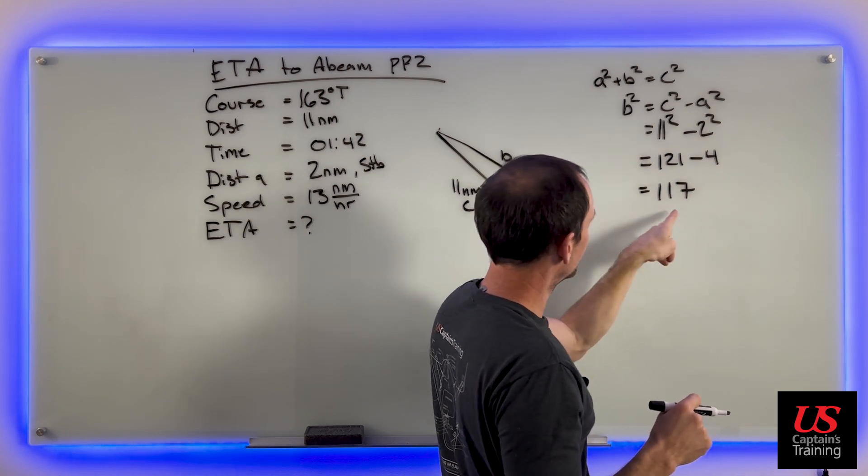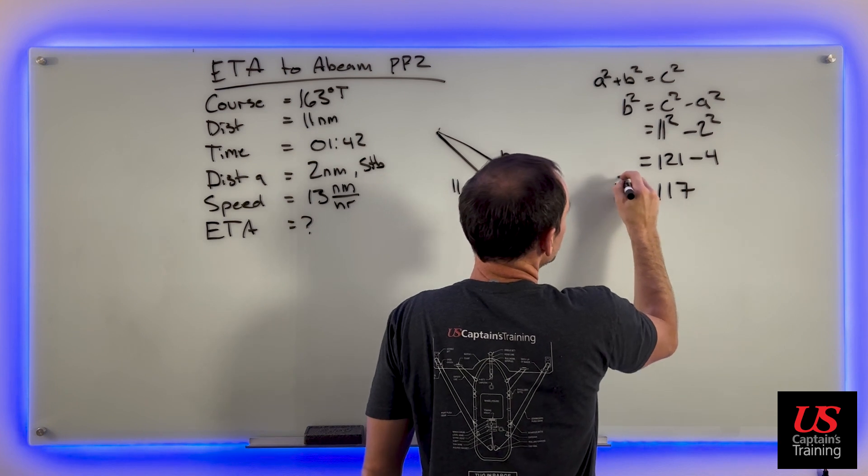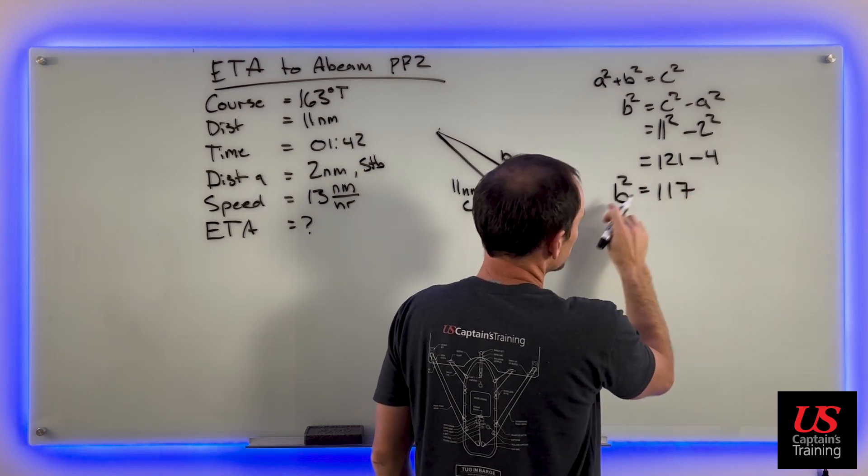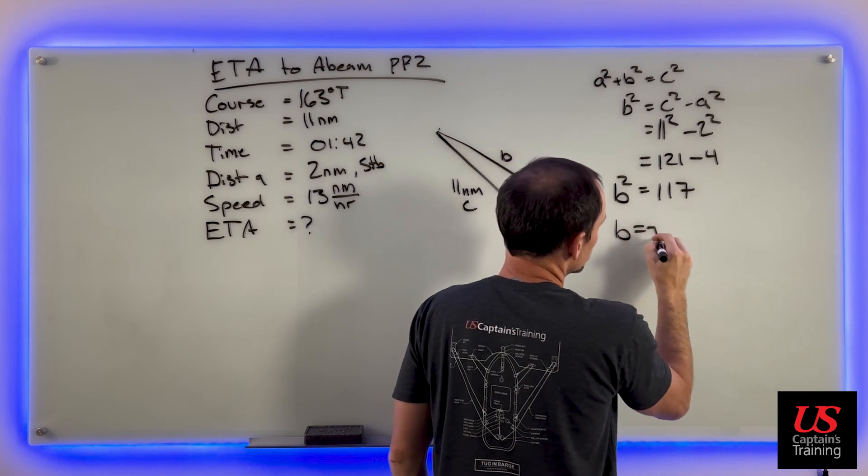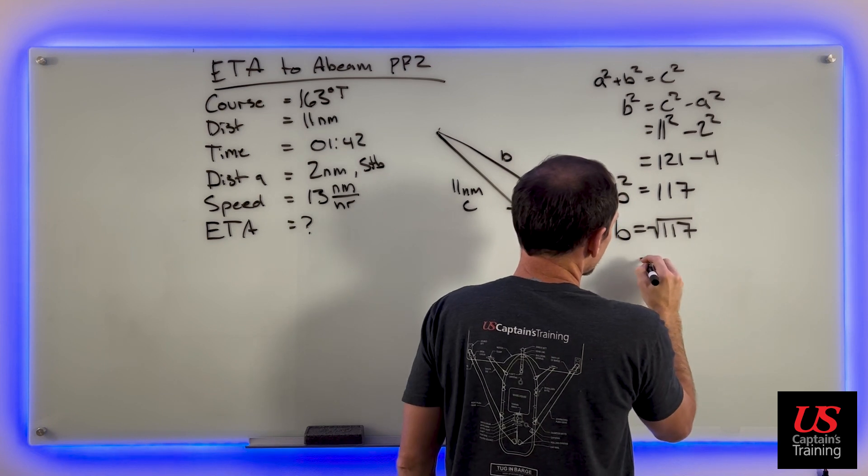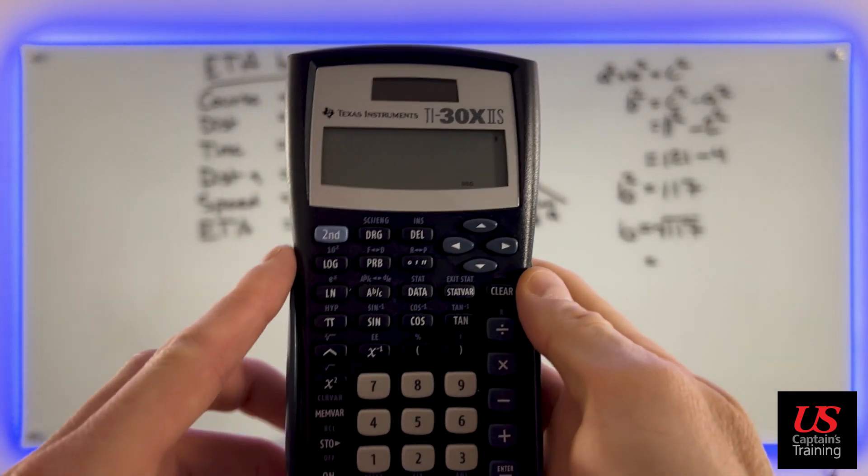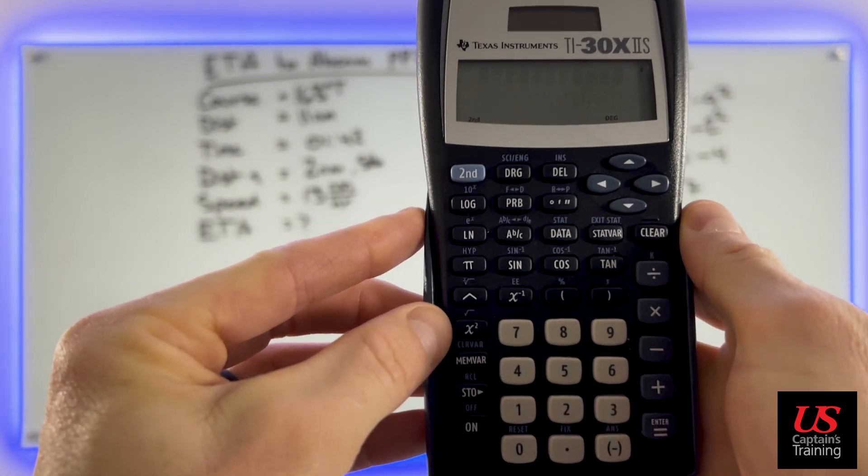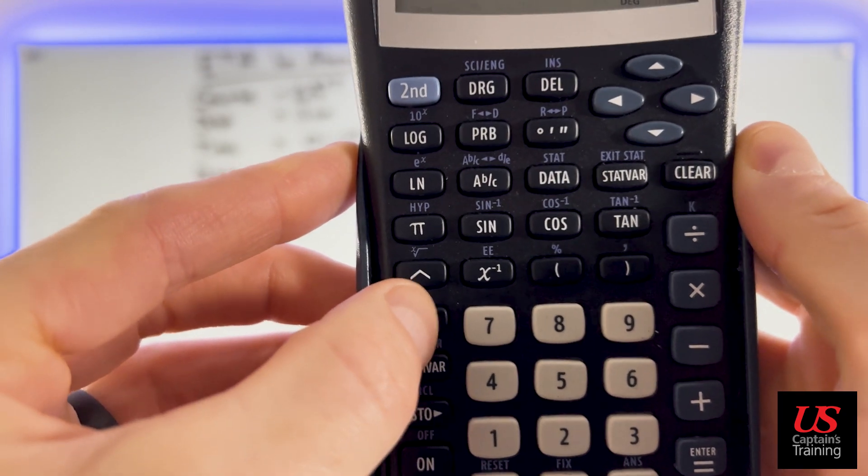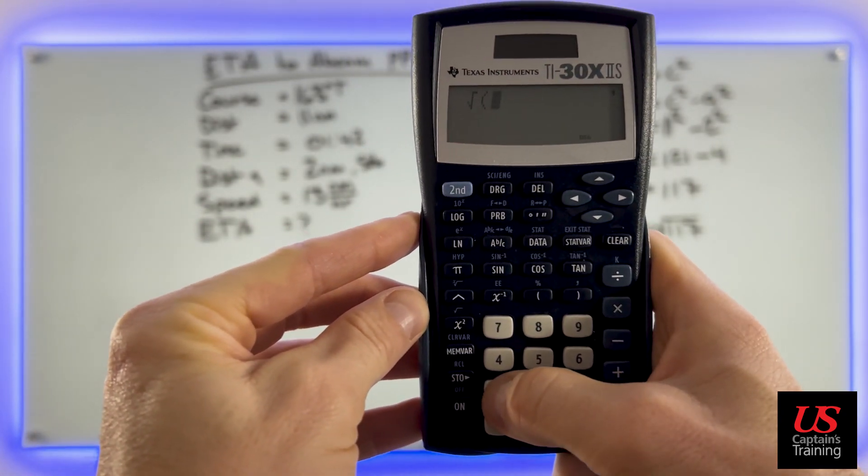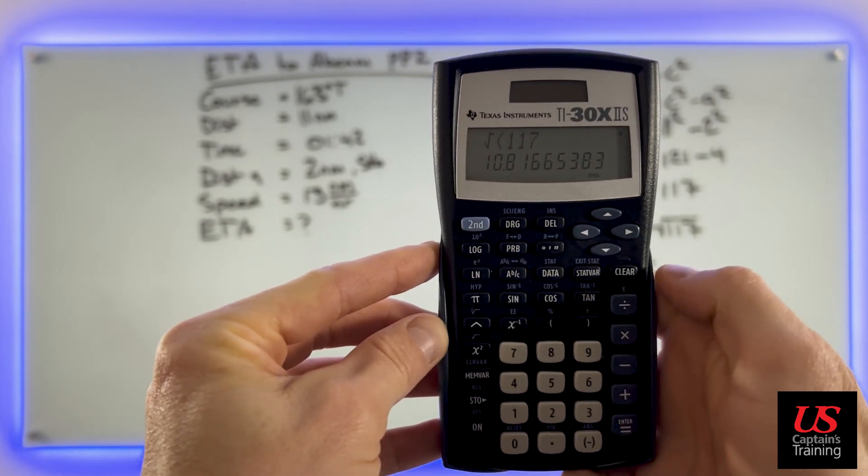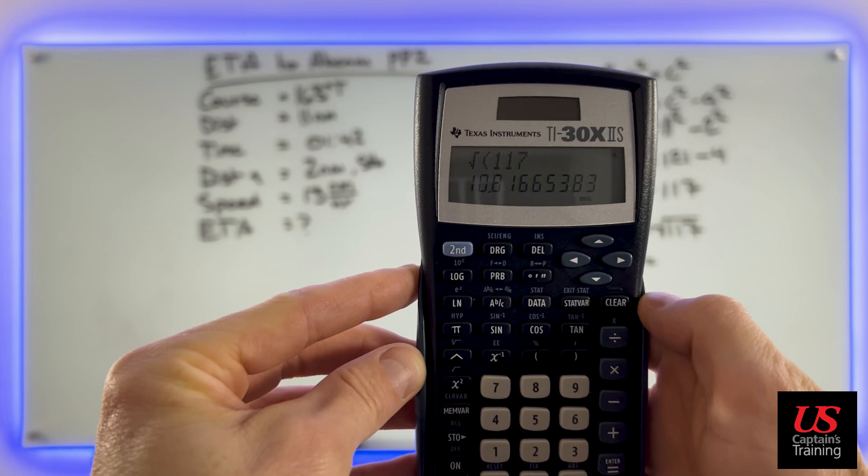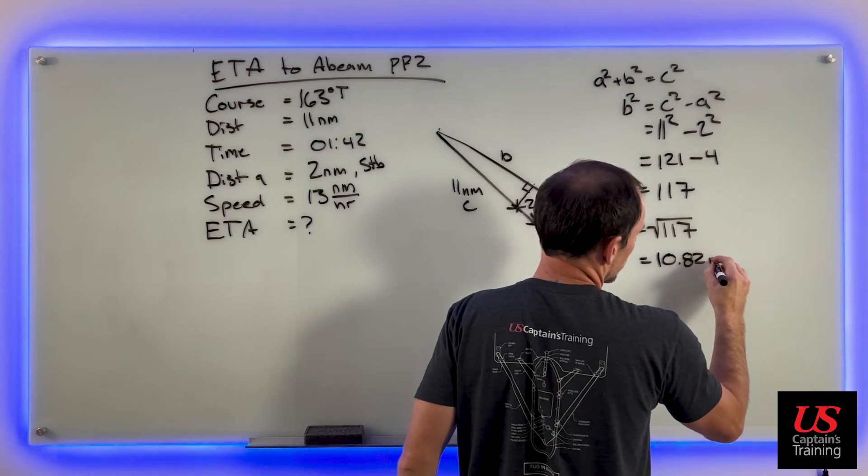b squared is 117. To get rid of this square, we take the square root of both sides. That square root and the square cancel out, we get b equals square root of 117. Let's put that in our calculators. We hit that second button and then that same square button - it's got that little square root - and then 117 equals 10.8166.